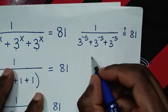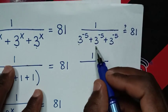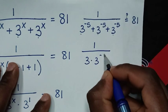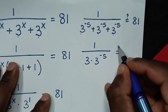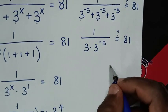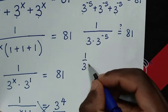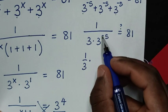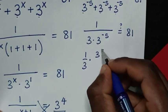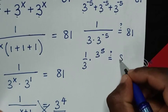It will be 1 over — here 3^x is negative 5 — so it will be 3 times 3^(negative 5), is it equal to 81? In the next step, it will be 1 over 3, then times, this denominator of 3^(negative 5) moved to the numerator becomes 3^5, is it equal to 81?